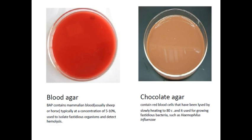Blood agar medium allows a group of bacteria to grow on its surface. Chocolate agar medium is supplemented with red blood cells that have been lysed by slowly heating at 80 degrees Celsius, and it is used for growing fastidious bacteria such as Haemophilus influenzae.